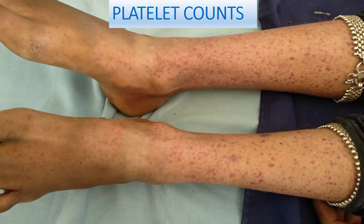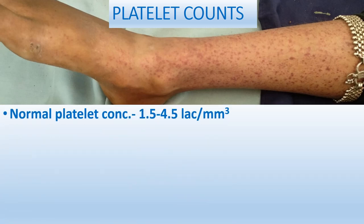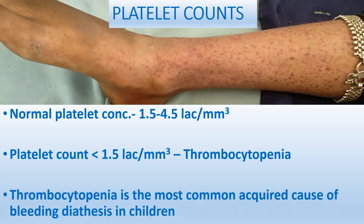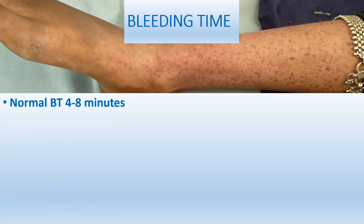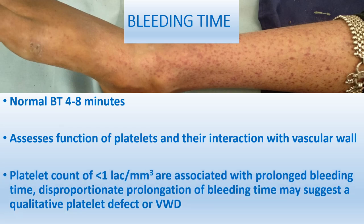Normal platelet concentration is 1.5 to 4.5 lakh per mm³. We label thrombocytopenia when the count is less than 1.5 lakh per mm³, but bleeding manifestations generally occur only when the platelet count is less than 50,000. Mild bleeding can be seen between 50,000 and 1 lakh. Thrombocytopenia is the most common acquired cause of bleeding diathesis in children. Platelet counts less than 1 lakh per mm³ are associated with prolonged bleeding time.